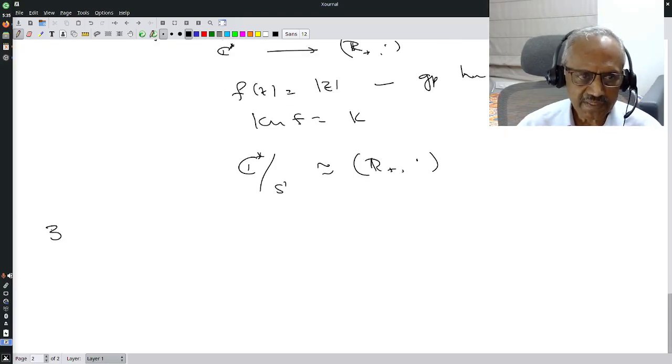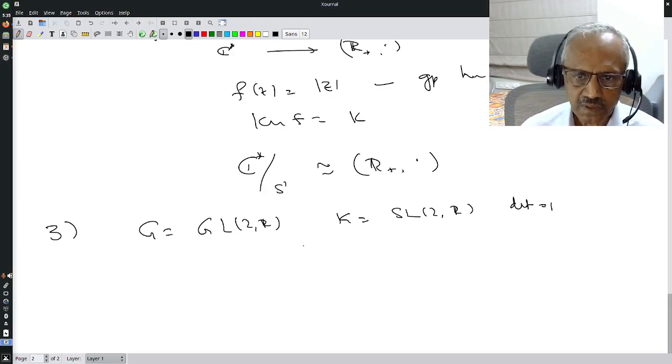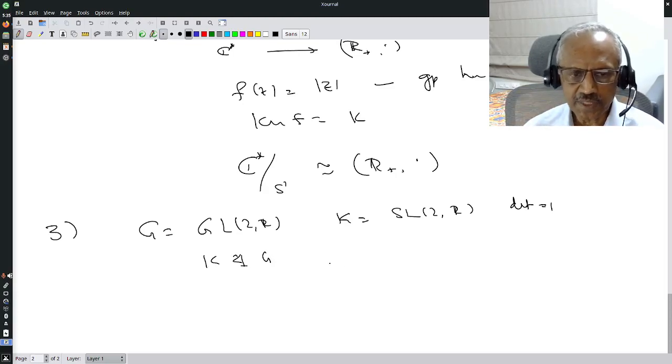I will stop with the third example. G is now GL(2,R), all 2 by 2 invertible matrices. K is SL(2,R), all matrices with determinant 1. K is a normal subgroup of G. Use the multiplicative property of determinants to show that K is a normal subgroup.